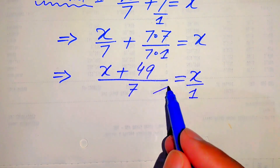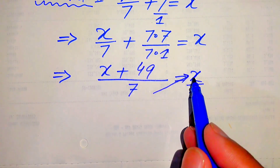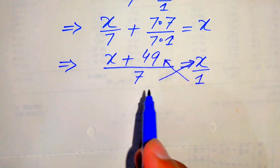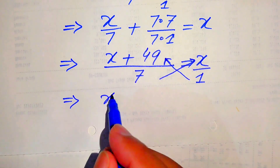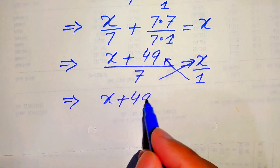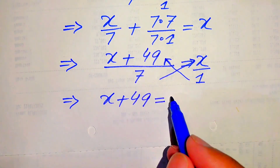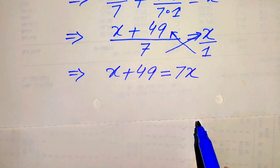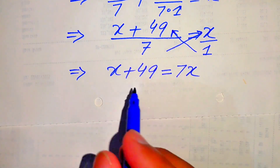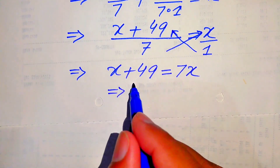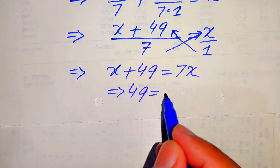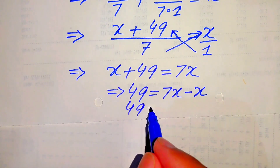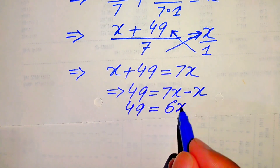The denominator of x on the right is 1. We cross-multiply: 7 multiplied by x and 1 multiplied by x plus 49, giving x plus 49 equals 7x. Moving x to the right-hand side gives 49 equals 7x minus x, so 49 equals 6x.